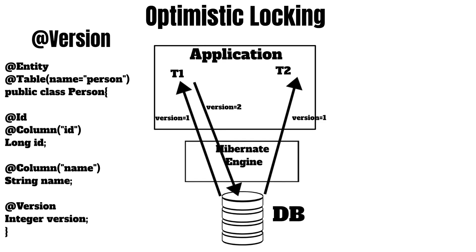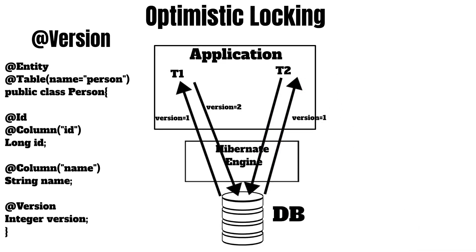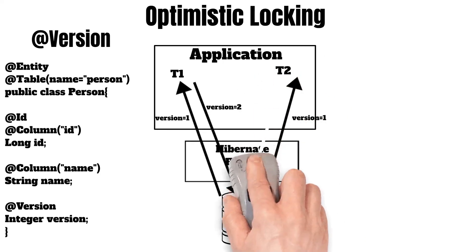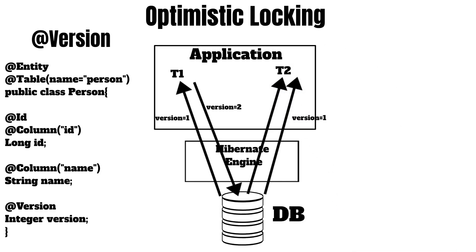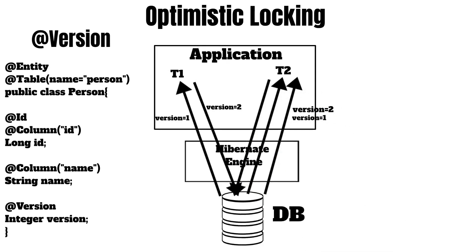Now suppose transaction t1 tries to update this property. Hibernate will first check whether t1 has the latest version. Since the latest version is 2 and t1 has version 1, Hibernate will not allow t1 to update this entity. To solve this problem, we need to re-read the entity. Hibernate will then provide us the latest version which is version 2. Now since we have the latest version, Hibernate will allow the update and then increment the version to version 3. This is optimistic locking, where Hibernate maintains locking at the application level using the version property.